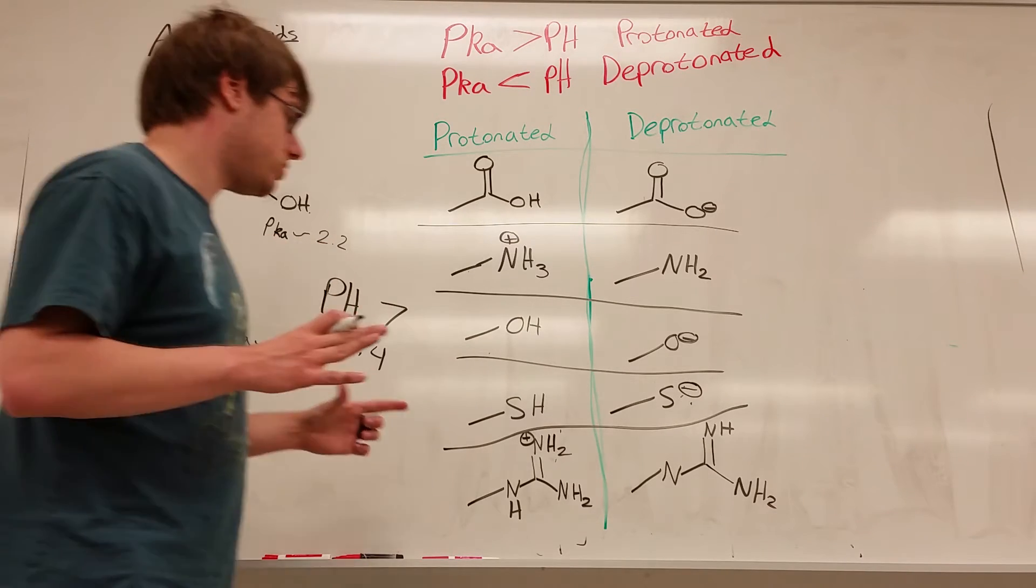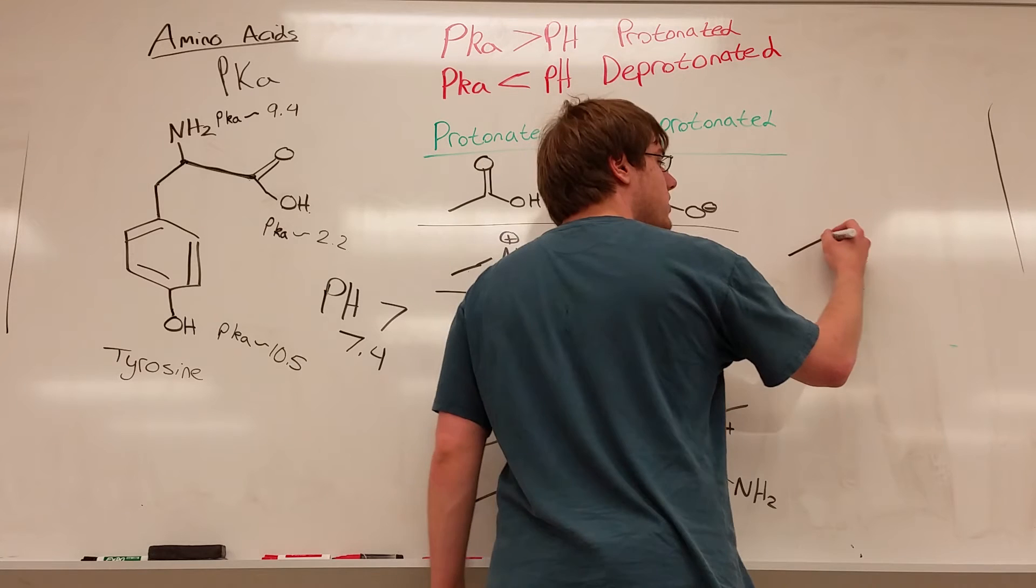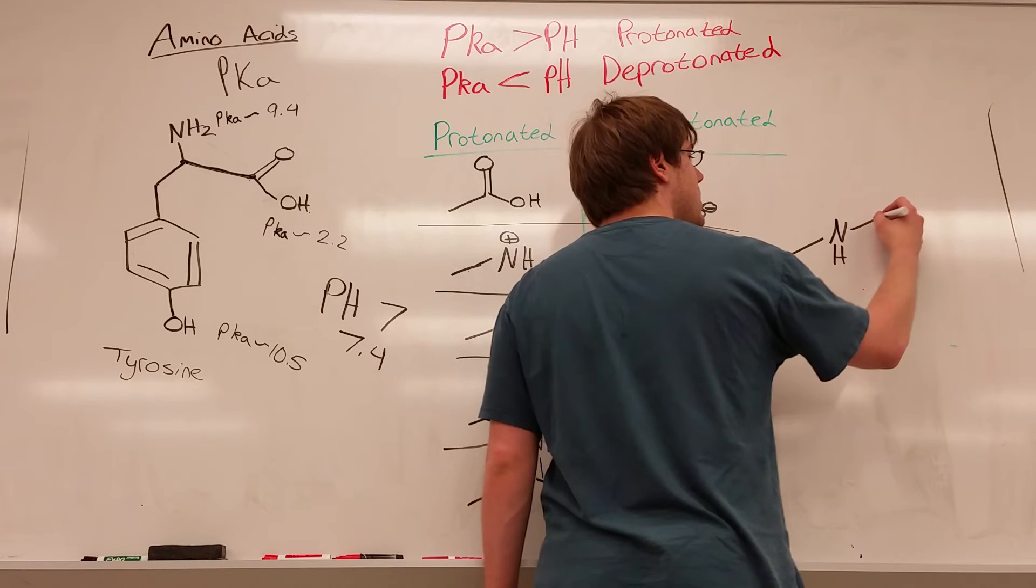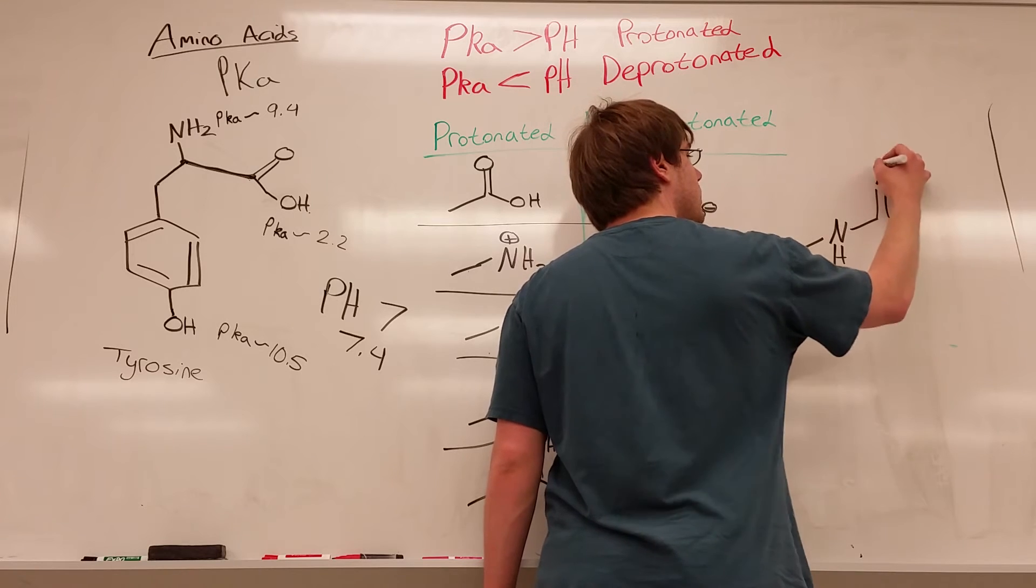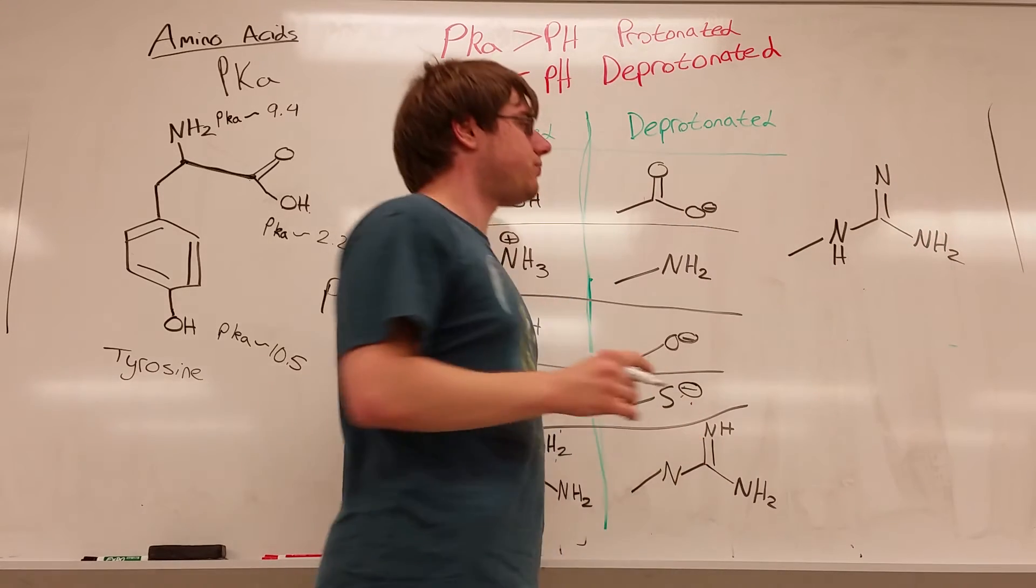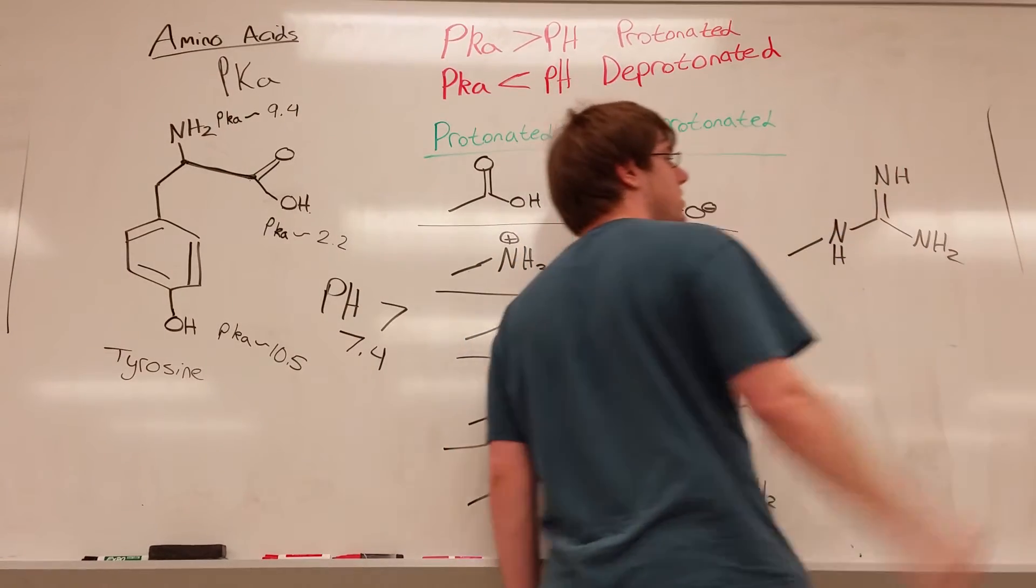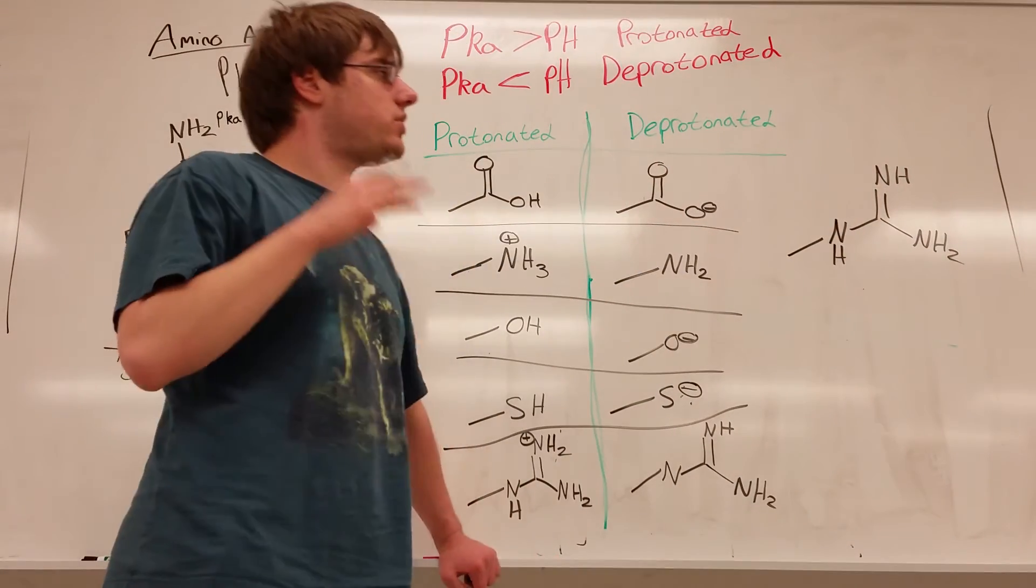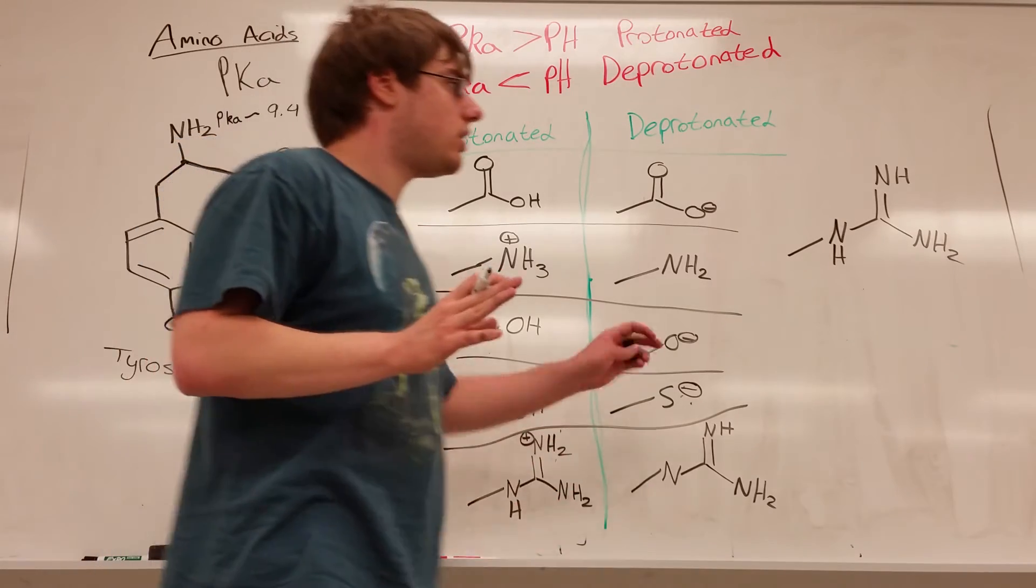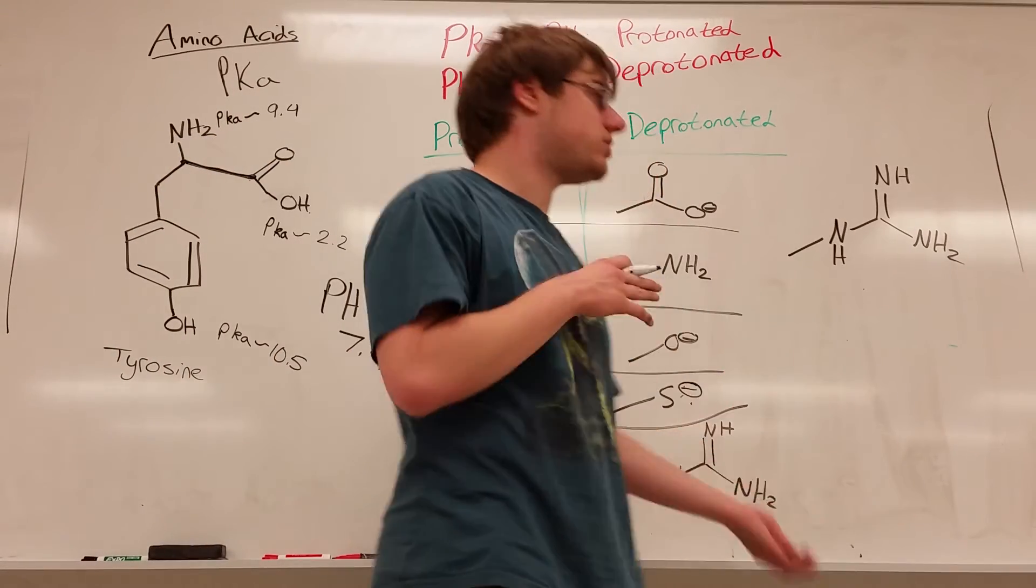Finally, there's one weird looking functional group, which I'm going to redraw over here. And this is specific to one amino acid. It only exists in one amino acid, and that amino acid is arginine, where you have this weird looking thing on its side chain. Something with three different nitrogens and then a hydrogen over there. So what does this look like when it is protonated? Well, you can see it here, but let's talk about why that is the case, because this might come up.